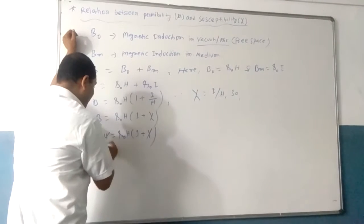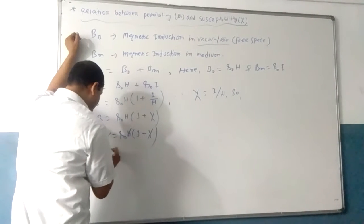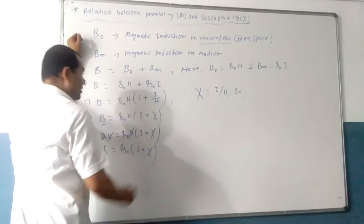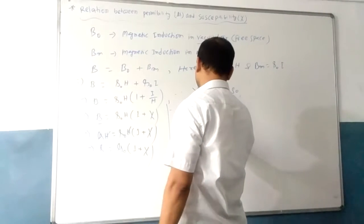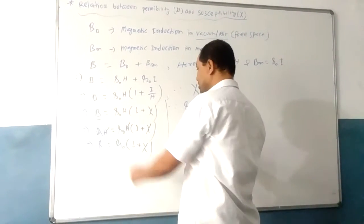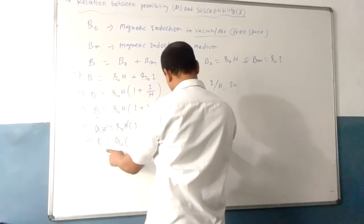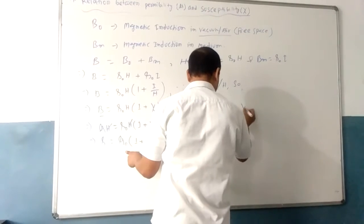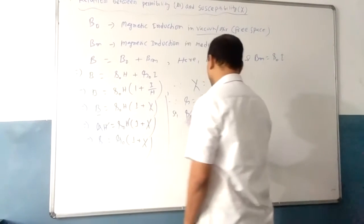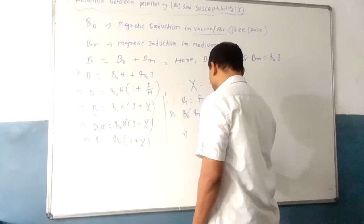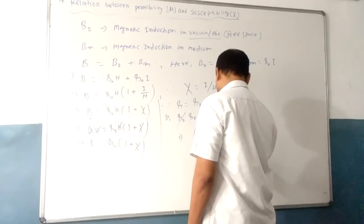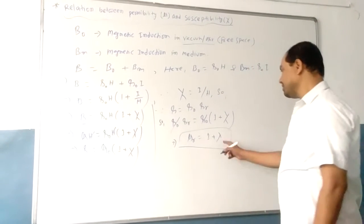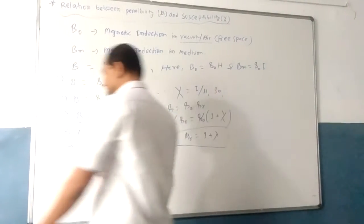Now, since B equals μ·H, we can write μ·H equals μ0·H into (1 plus χ). Cancelling H on both sides gives μ equals μ0 into (1 plus χ). We also know that μ equals μ0·μr, so μr equals 1 plus χ. This is the relation between permeability and susceptibility.